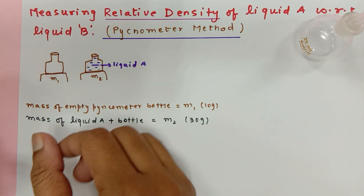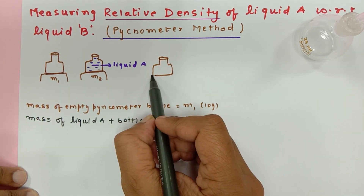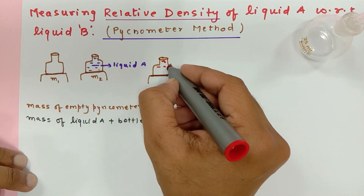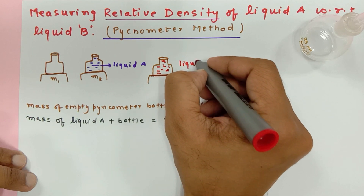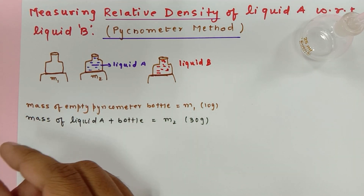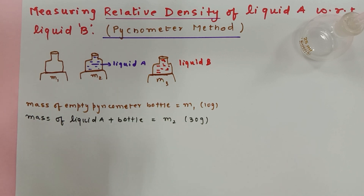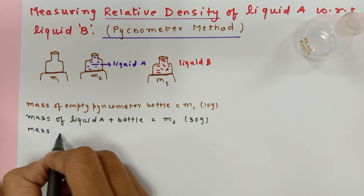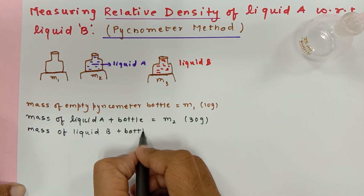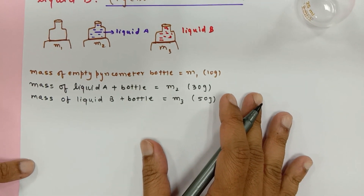Now I pour the liquid out, clean the bottle, and dry it again. I place the bottle back on the digital balance, but this time I add liquid B inside it. Since liquid A and liquid B are totally different, the mass will be entirely different. I get the mass of liquid B plus the bottle as M3 grams. Let's consider M3 as 50 grams.